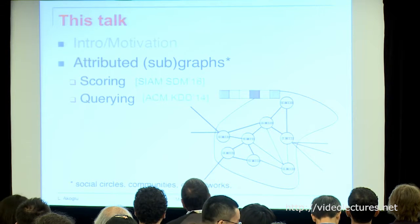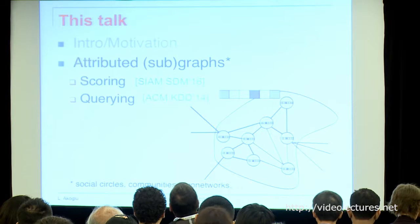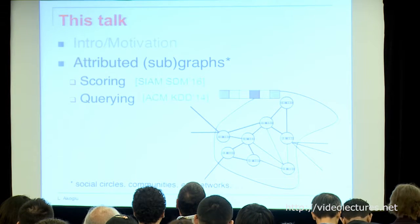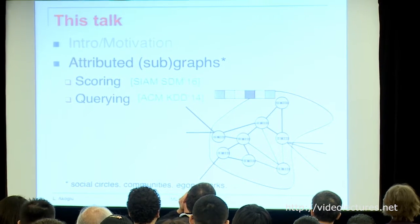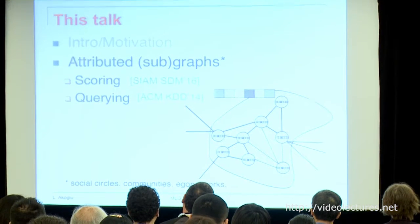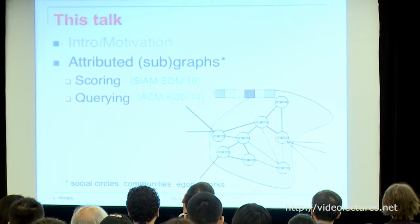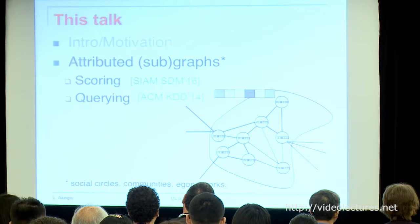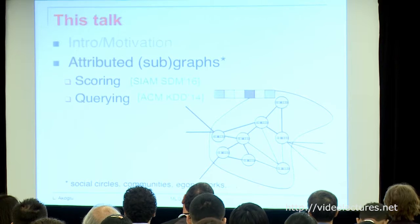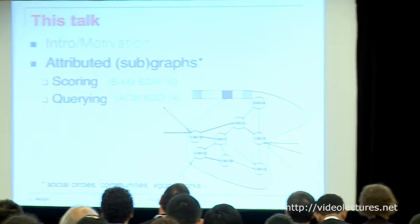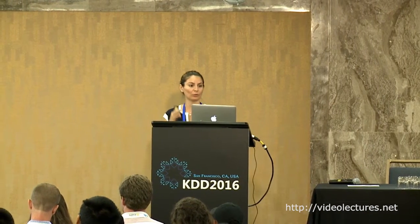In this talk, I will be particularly focusing on two such problems: scoring and querying in attributed networks. My focus will be subgraphs — scoring subgraphs by quality, introducing a motivating application, as well as querying for subgraphs in an attributed graph. When I say subgraph, it's a general term — it could be social circles defined by humans, communities extracted by a community detection algorithm, or ego networks defined as nodes and their direct neighbors.